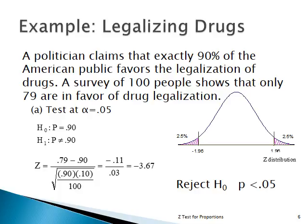The calculated Z value comes from the data: 79% of the sample favored legalization, so it's 0.79 minus 0.9, divided by the square root of 0.9 times 0.1 divided by 100. That gives negative 0.11 in the numerator and 0.03 in the denominator, yielding Z equals negative 3.67 — way out in the region of rejection. So we reject the null hypothesis at alpha equal 0.05.